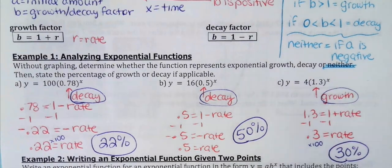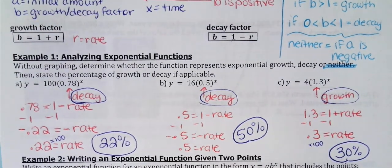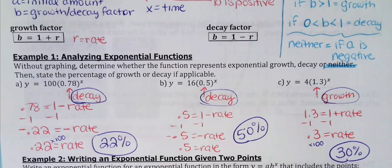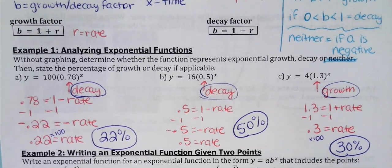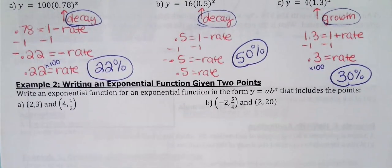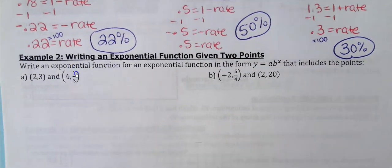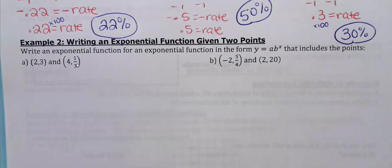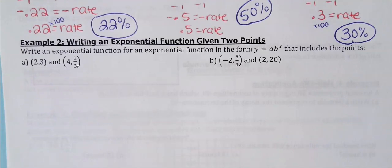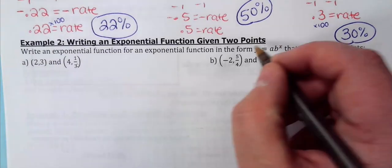Decay is 1 minus the rate. Growth is 1 plus the rate. Now the second thing we're going to do is write exponential equations from two given points. You're going to use those two points to write the equation in the general form y equals ab to the x.